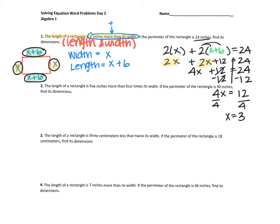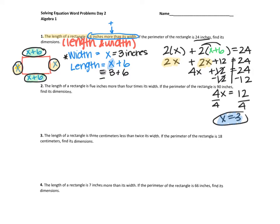But now I need to make sure I answer the question — I wanted to know the dimensions. We identified that our width is whatever X is, so the width is three inches. For our length, we take X and plug it in: X is three, so the length is three plus six, which means the length is nine inches.